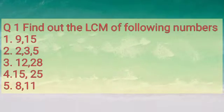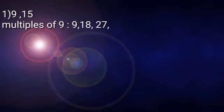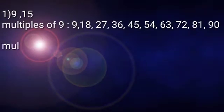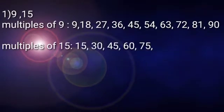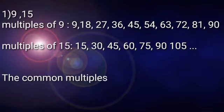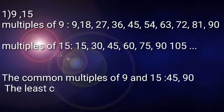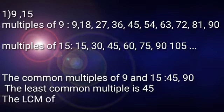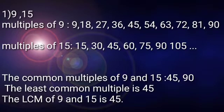Find out the LCM of following numbers. Children, the first is 9 and 15. Multiples of 9 means we have to write the tables of 9. For writing the multiples we should know the tables of the numbers. So, 9 and 15 table I have written here. The common multiple of 9 and 15 is 45 and 90. The least common multiple is 45.